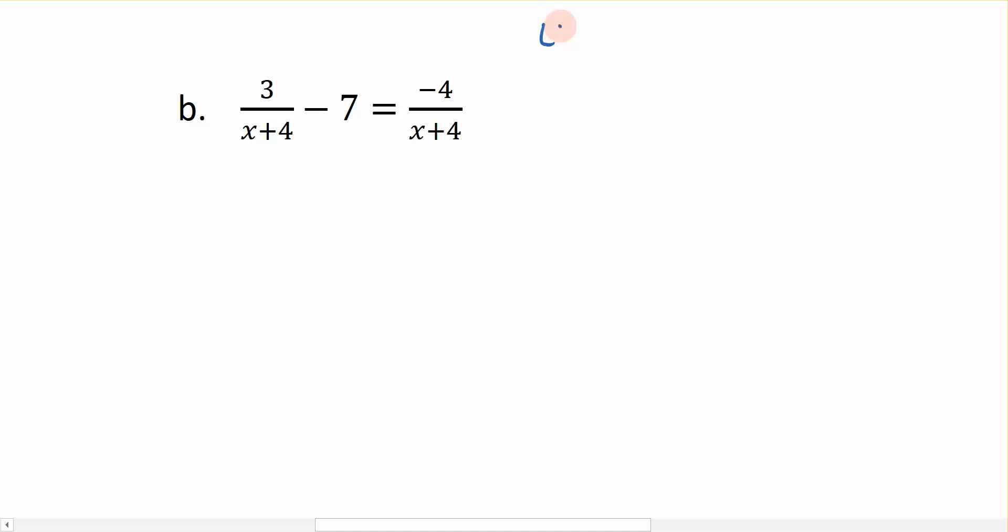When you're talking about multiplying through by a least common denominator, the only denominator that appears in this equation is x plus 4. So that is the value we're going to use to multiply through. I have 1, 2, 3 terms in this equation, and all three of these terms are going to be multiplied by x plus 4 over 1. So let's start.